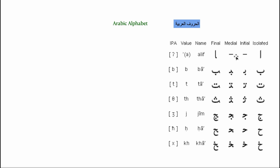Alif doesn't have an initial or a middle position. If it appears in the middle of a word, it's written like a final form but the next letter starts separately — so you write alif, then continue from the next letter independently. For example, if you want to write ba after alif, you write ba by itself without attaching it.